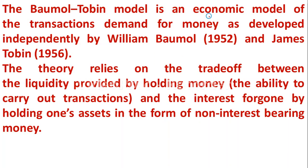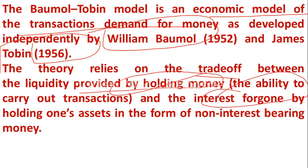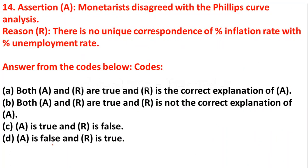The Baumol-Tobin model is an economic model of transactions demand for money, developed independently by William Baumol and James Tobin. The theory relies on the trade-off between the liquidity provided by holding money and the interest forgone by holding one's assets in the form of non-interest-bearing money.